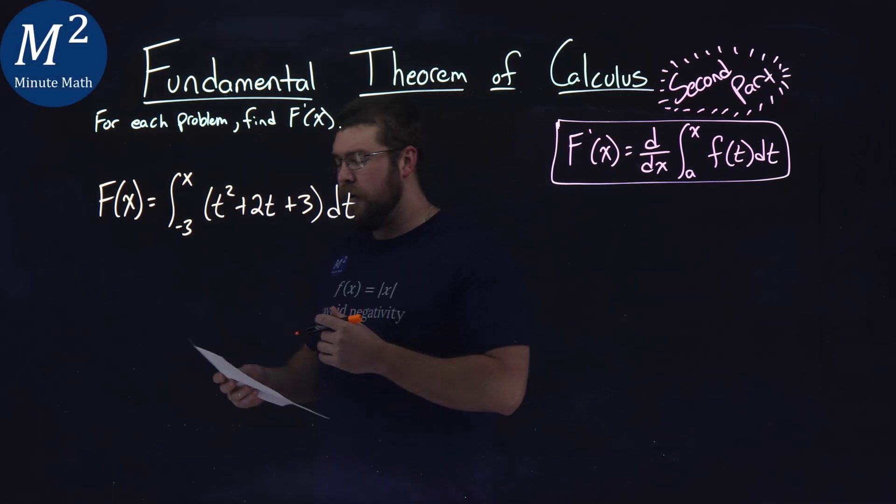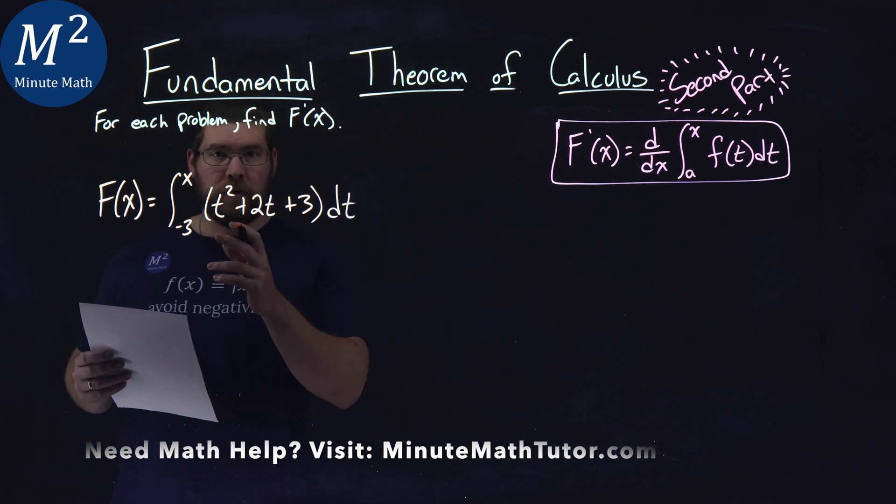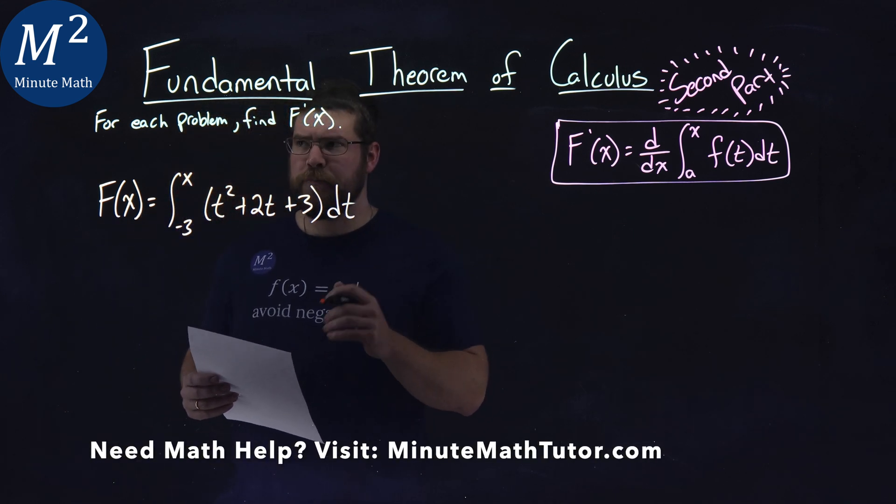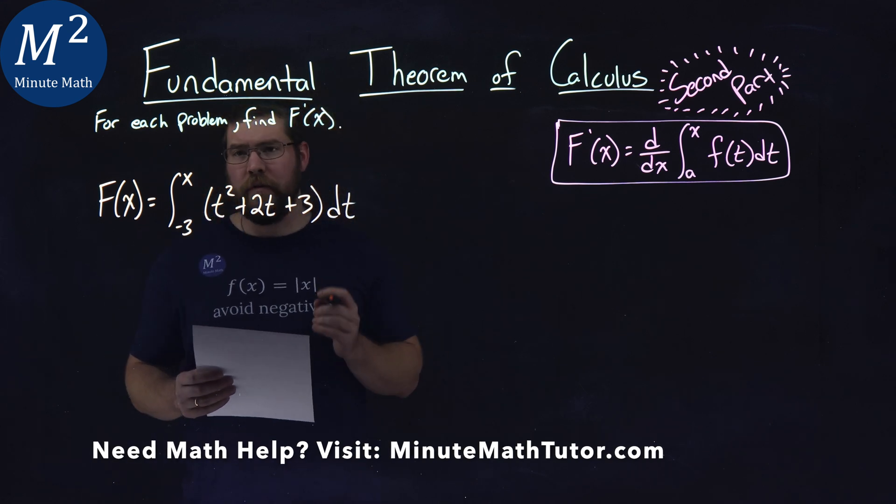We're given this problem right here. f of x is equal to the integral from negative 3 to x of t squared plus 2t plus 3 dt, and we want to find f prime of x.